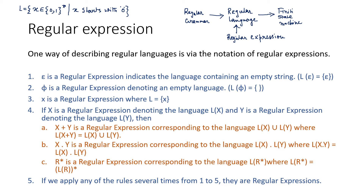Let's try to understand what types of regular expressions are possible to express a language. You need to understand these five points to create a regular expression for your own language. Point number one: epsilon is a regular expression indicating the language containing an empty string. As discussed at the very beginning of automata theory, an empty language means a language having an empty string.